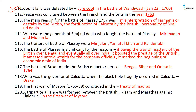The main reasons for the Battle of Plassey 1757 were: first, misinterpretation of the firman or dastak by the British; second, the fortification of Calcutta by the British; and third, the personality of Siraj ud-Daulah — he was young and foolish. The generals of Siraj ud-Daulah who fought in the Battle of Plassey were Mir Madan and Mohan Lal. The traitors in the Battle of Plassey were Mir Jafar, Rai Durlabh, and Yar Lutuf Khan.